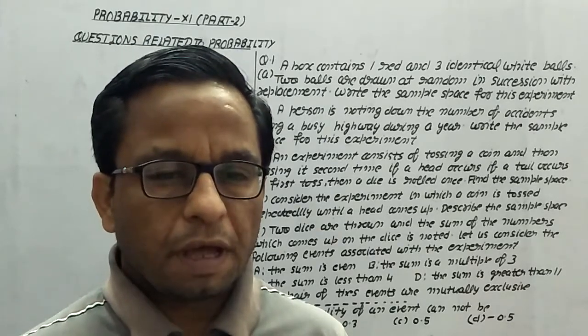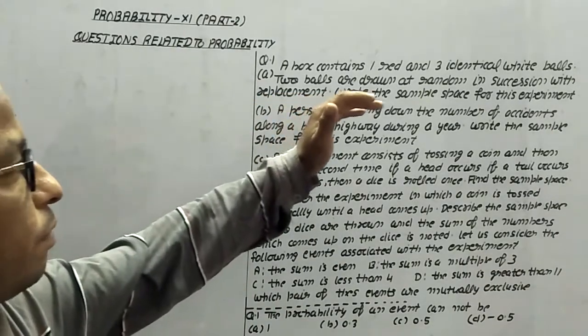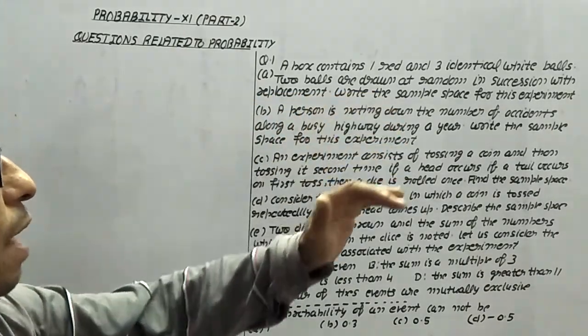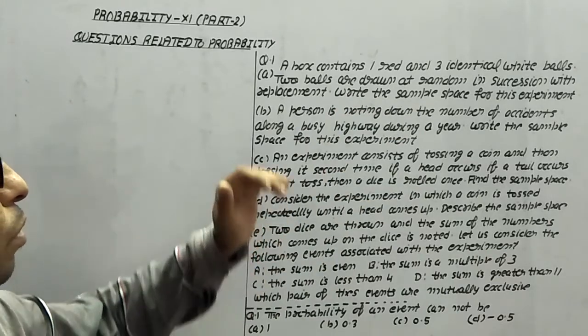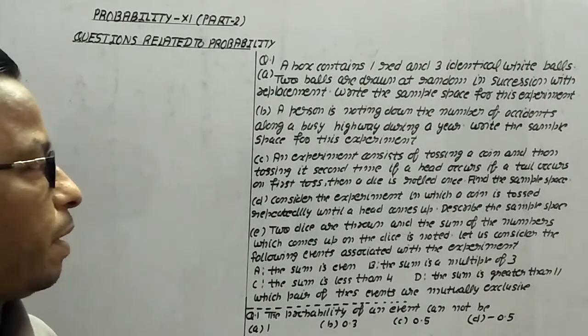Let's start with question number 1A. A box contains one red and three identical white balls. Two balls are drawn at random in succession with replacement. Write the sample space for this experiment.